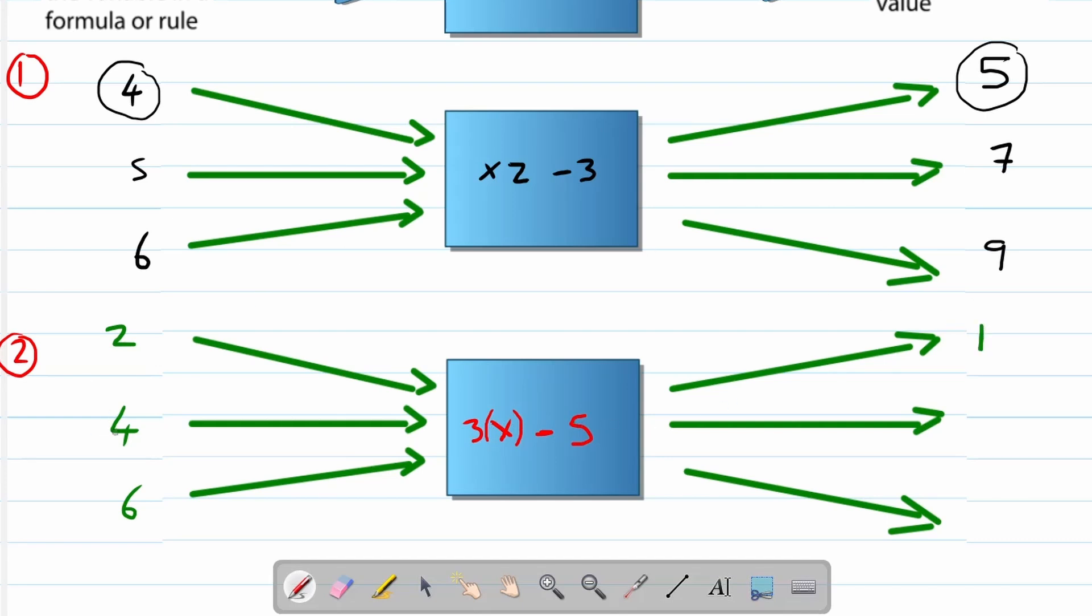Now let's look at four. Four times three is twelve. Twelve minus five is equal to seven. Six times three, remember six is where the x is now, it's equal to eighteen. Eighteen minus five is equal to thirteen.